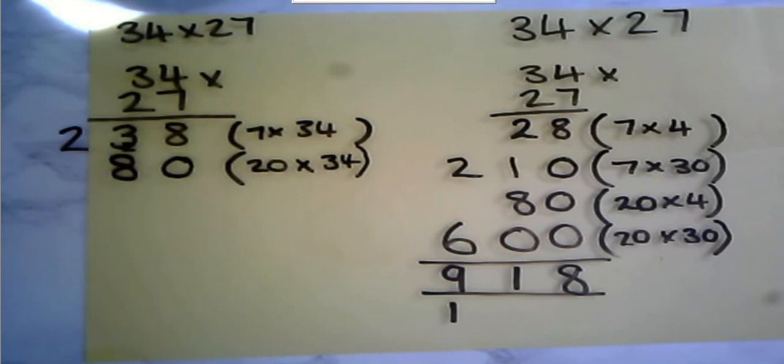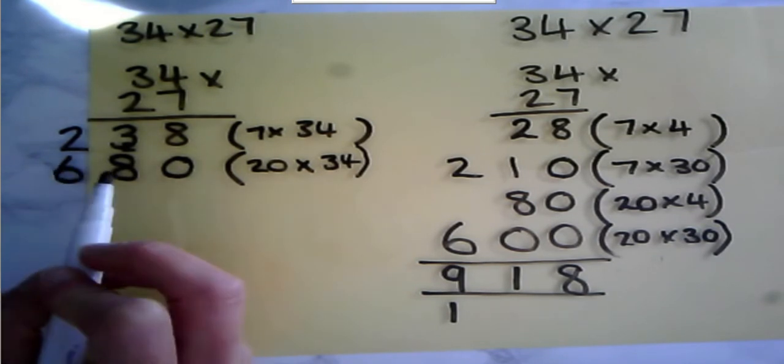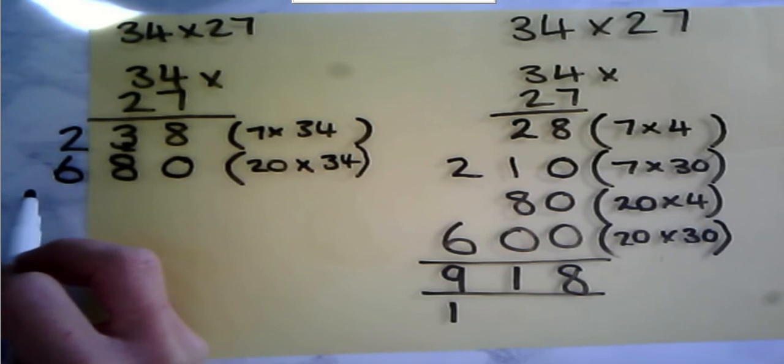So I know that my 2 tens multiplied by 4 is going to give me 8 tens. So that goes in my tens column. Final calculation I need to do is my 20×30, which we knew gave us 600. So I need to make sure that I'm putting this in the correct column, and my 6 one hundreds go in my hundreds column.